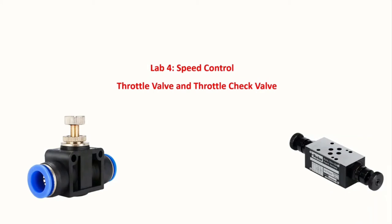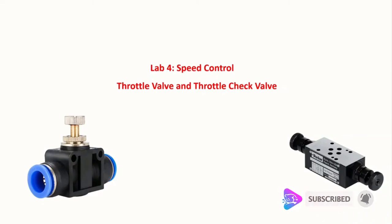What is a throttle valve? With the use of a throttle valve in a pneumatic circuit, we have the capability of changing the speed of an actuator by changing the opening level of the throttle valve. As we reduce the opening level, the amount of flow that can pass through that valve decreases, and therefore the speed of actuation is reduced.